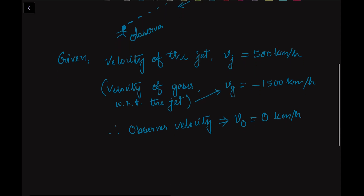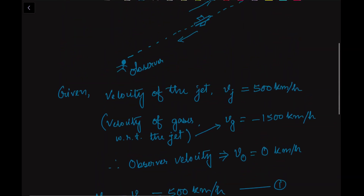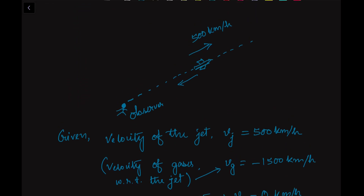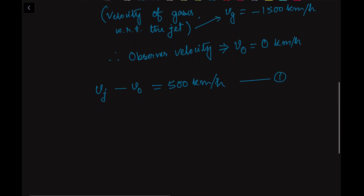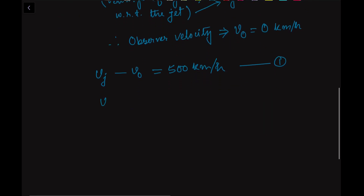We are given that the velocity of the plane with respect to the observer. So we can write: Vj minus V_o equals 500 km per hour — this is equation number one. Secondly, we are given that the velocity of the ejected products with respect to the jet is 1500 km per hour, moving in the opposite direction, so we put a negative sign. Therefore, velocity of the gases relative to the jet, Vg minus Vj, equals minus 1500 km per hour — this is equation number two.